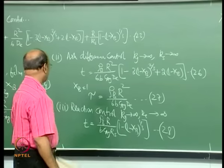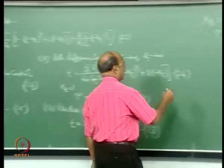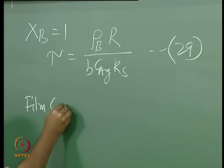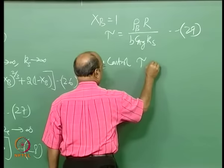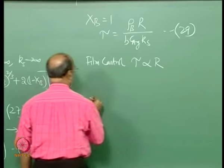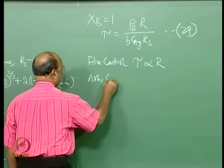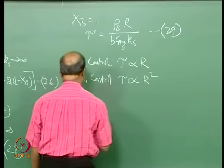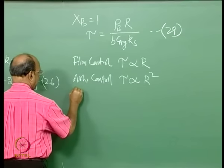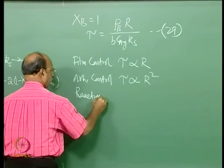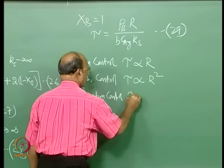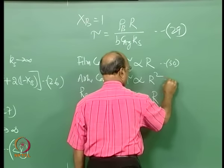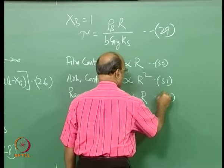There is some hidden information in these equations if you look carefully. For film control, tau_B is proportional to R. For ash diffusion control, tau_B is proportional to R^2. For reaction control, tau_B is proportional to R. These are equations 30, 31, and 32.